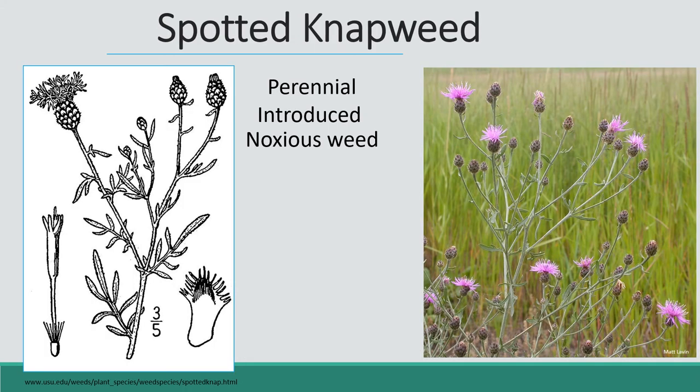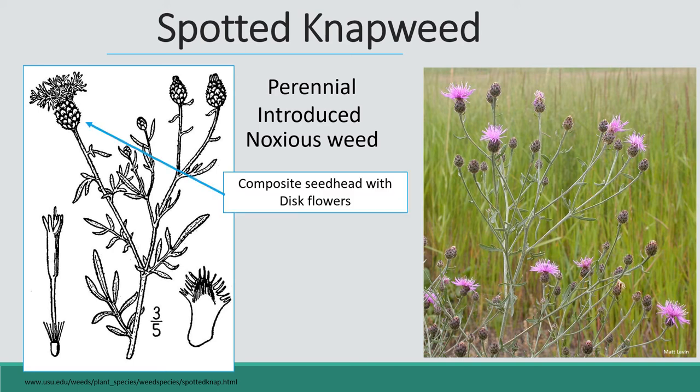Another noxious weed we have in Idaho — and across the whole west — is spotted knapweed. All of the knapweeds have either a white or purple flower, and this one has a beautiful purple flower. Right underneath that purple you'll see it's kind of spotted, which is why it's called spotted knapweed. It has a composite seed head — those little cups that the flowers are in are bracts, and the flowers are actually disc flowers. The leaves are mostly deeply lobed, kind of hairy, and the outline looks almost like fingers.